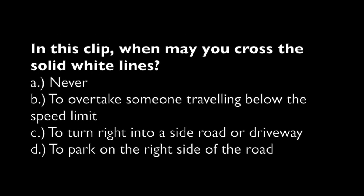In this clip, when may you cross the solid white lines? A. Never. B. To overtake someone traveling below the speed limit. C. To turn right into a side road or driveway. D. To park on the right side of the road.